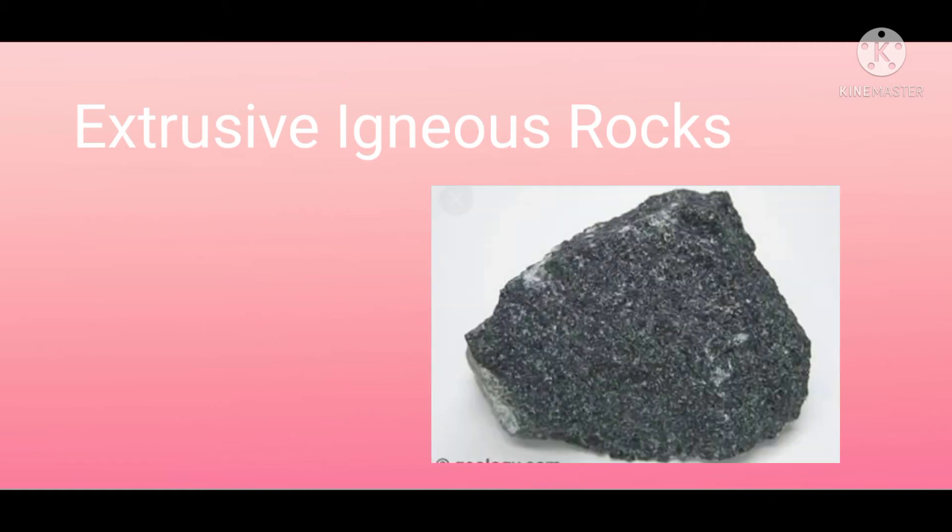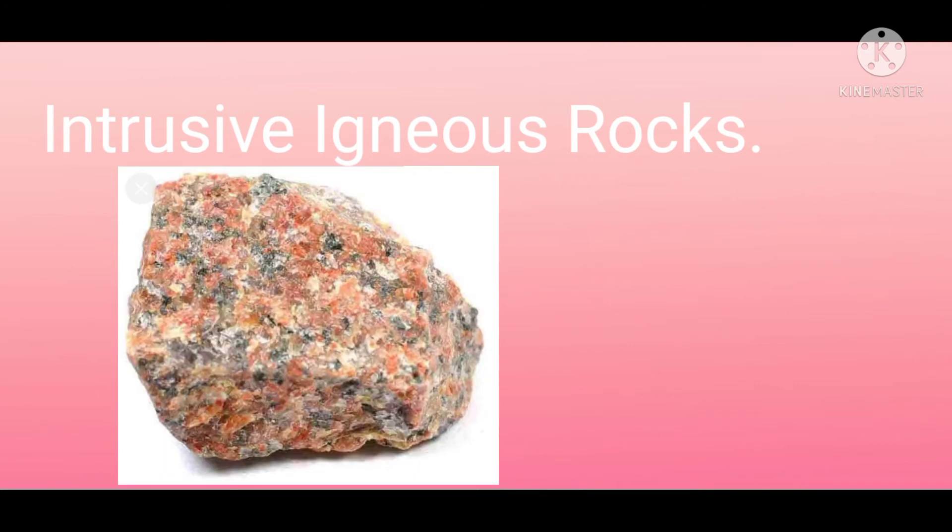Extrusive igneous rocks: when molten magma comes onto the earth's surface, it rapidly cools down and becomes solid rock. Rocks formed in this way on the crust are called extrusive igneous rocks — for example, basalt. Intrusive igneous rocks: sometimes molten magma cools down deep inside the earth's crust, forming solid rocks called intrusive igneous rocks — for example, granite.